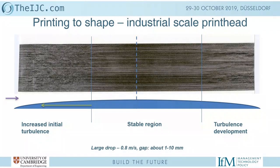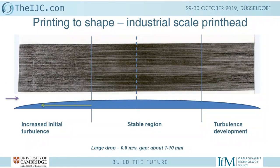Let's see what happens with a single nozzle — that's really important complementary information to what we have with an industrial-scale print head. It's not the same having a single drop or a single chain of drops compared to a whole array of drops. Let's see what happens when we print a full image with several nozzles.